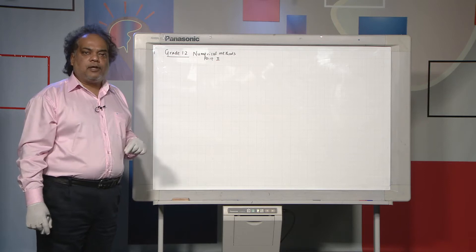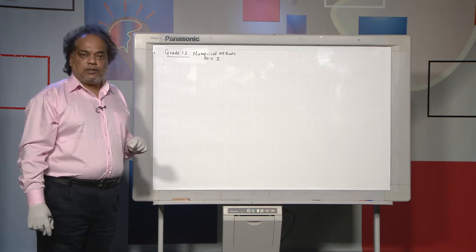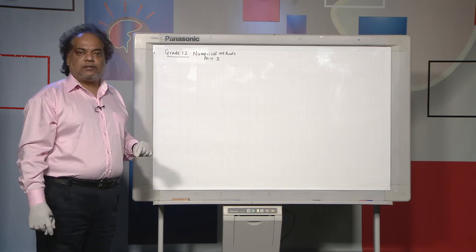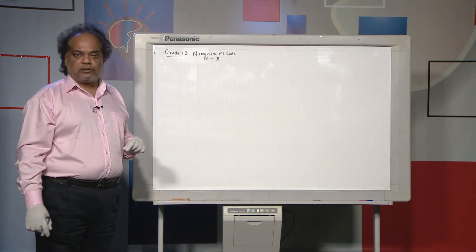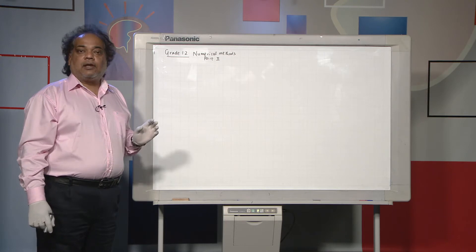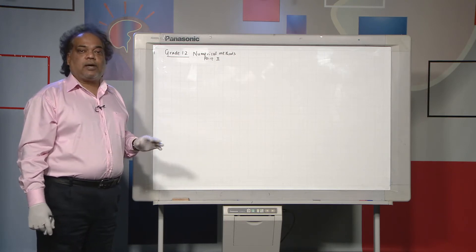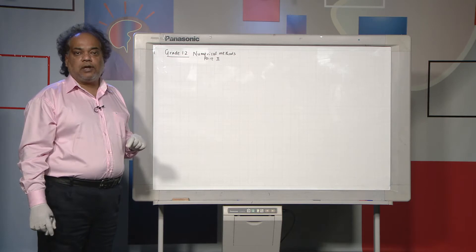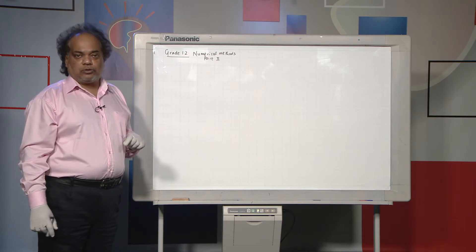In Part 1, you remember, we looked at what is a numerical method, what are the advantages, what are the disadvantages, and then when do we use a numerical method. And then finally, we ended up the first part by showing to you how to calculate the initial solution.